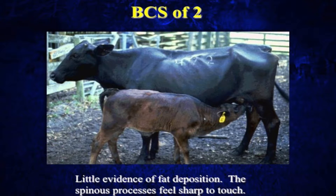Going from a body condition score two to a five, you're looking at 150 to 200 pounds of weight difference. A body condition score two is probably going to be a little too thin. If our whole herd is looking like that, we really didn't do a good job nutritionally managing them.